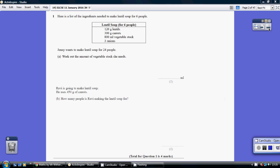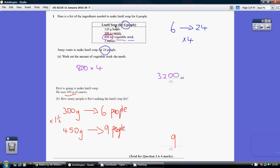Question 1. The ingredients that we've been given are for 6 people. We want to work out how much for 24 people.